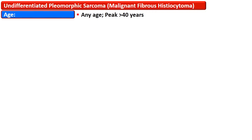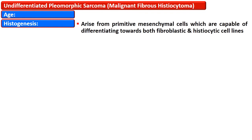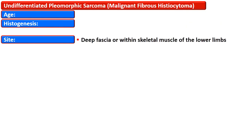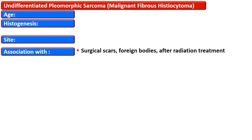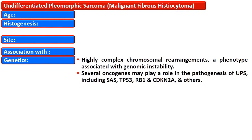Undifferentiated pleomorphic sarcoma may arise at any age but the peak age is above 40 years. These tumors arise from primitive mesenchymal cells capable of differentiating toward both fibroblastic and histiocytic cell lineage. They arise from the deep fascia or within the skeletal muscles of the lower limb and are frequently associated with surgical scars, foreign bodies, and after radiation treatment. They have a complex karyotype and several oncogenes may play a role in pathogenesis, including SAS, TP53, RB1, and CDKN2A.